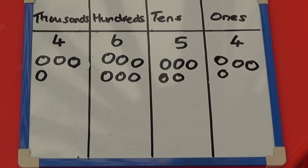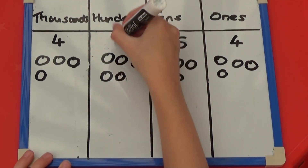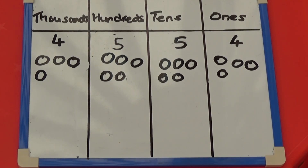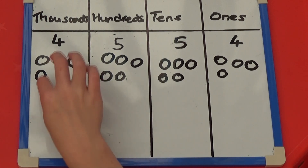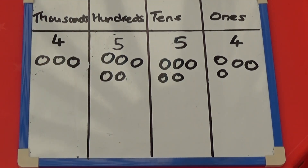We can also draw a picture to help us understand this. I've drawn out the counters for the number 4654. To subtract 100, I need to remove a 100 counter, which makes my number 4554. Then to subtract 1000, I'm going to remove a 1000 counter, which makes my number 3554.